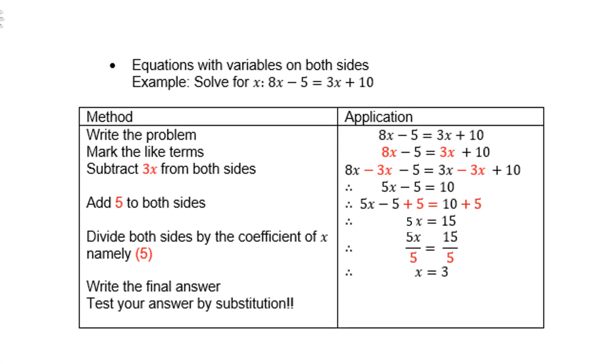Equations with variables on both sides. For example, 8x minus 5 equals 3x plus 10. You write down the problem, then mark the like terms. 8x and 3x in red are the like terms. Then subtract 3x from both sides. Why? Because I want 3x to cancel on the right-hand side. Then I'm left with 5x minus 5 equals 10. Then add 5 to both sides. Why? Because I want to get rid of the 5 on the left-hand side. So 5x equals 15. Divide both sides by 5, then you get x equals 3.